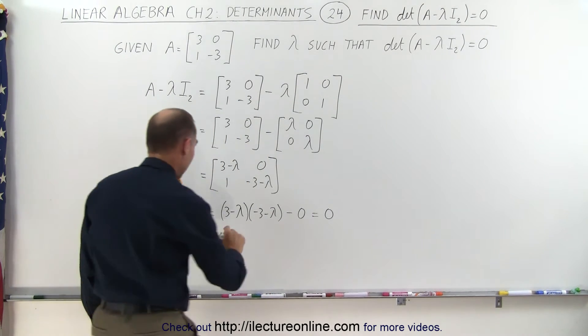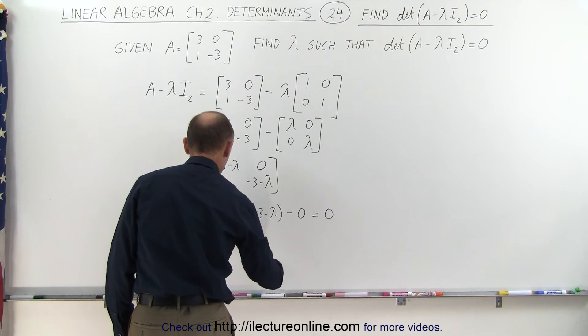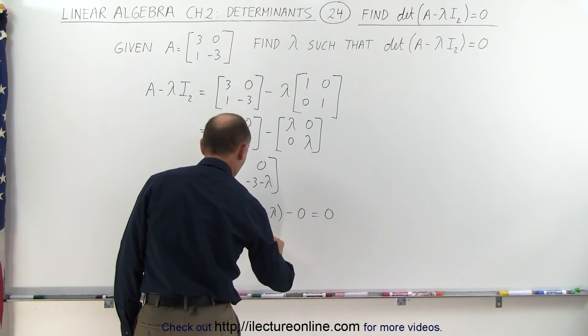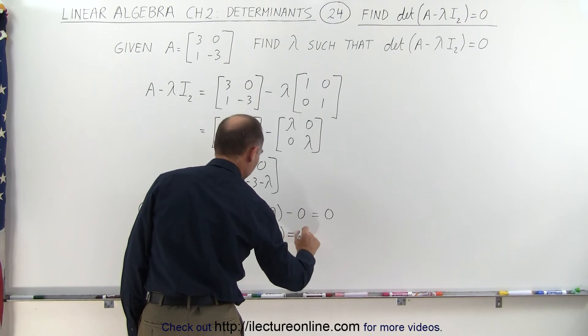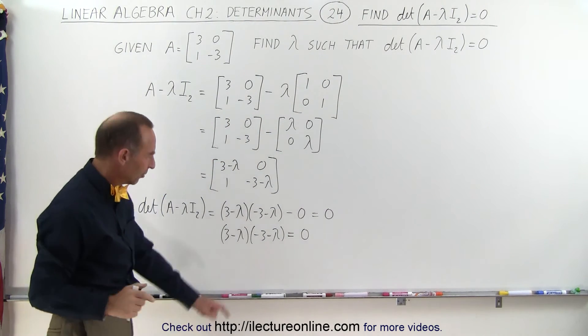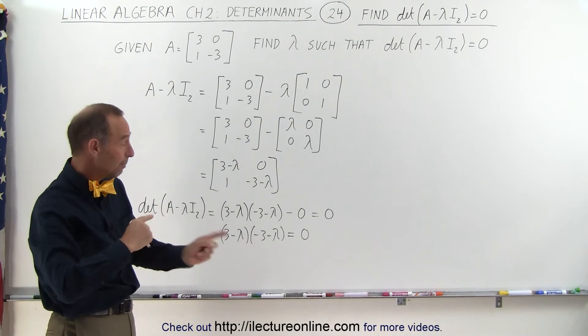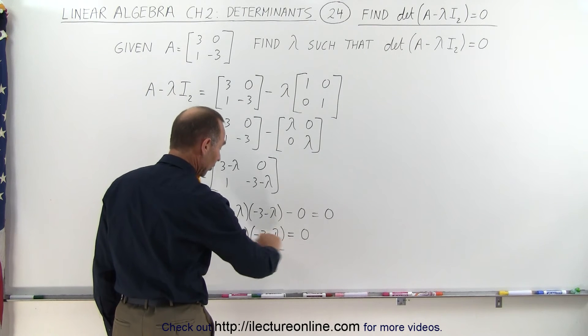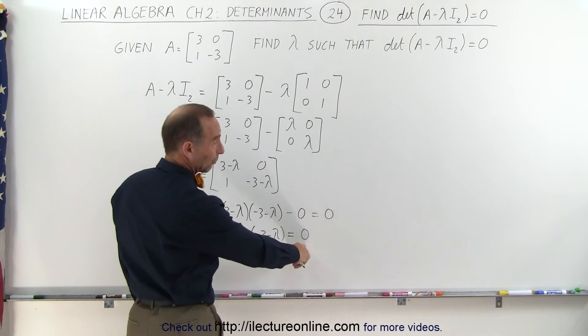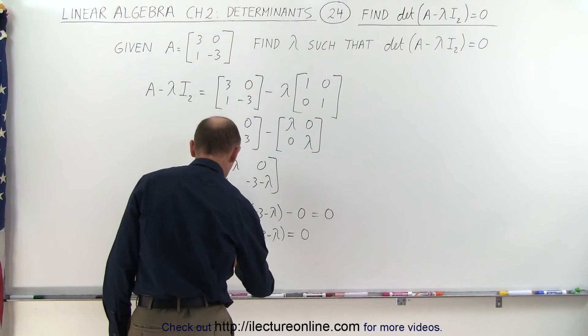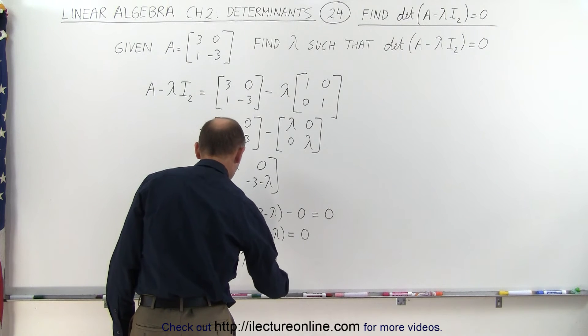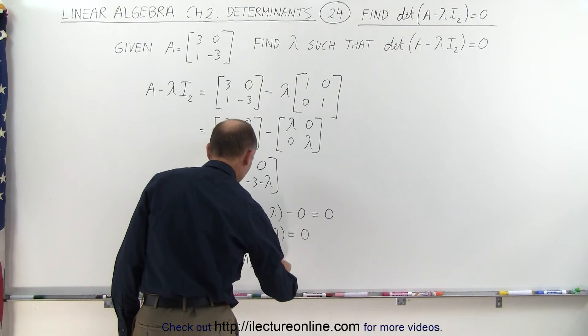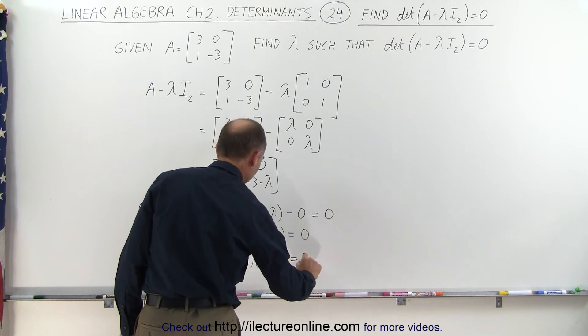Which means that 3 minus lambda multiplied times minus 3 minus lambda equals zero. Now I don't like all these negative signs here, so I'm going to multiply both sides of the equation by a negative 1, which makes these all into positives. Of course negative 1 times 0 is still 0. So we get 3 minus lambda multiplied times 3 plus lambda equals 0.